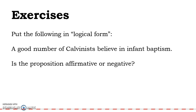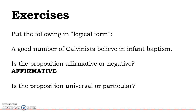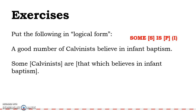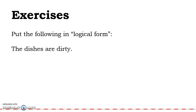'A good number of Calvinists believe in infant baptism.' Affirmative or negative? Affirmative. Universal or particular? We're talking about 'a good number,' so that's particular. Affirmative particular — that is our I form: Some S is P. Now let's put the matter in the brackets: 'Some Calvinists are that which believes in infant baptism.' We say 'that which' at the beginning because our predicate is 'believe in infant baptism' — we tag on 'that which' and it works out quite nicely.